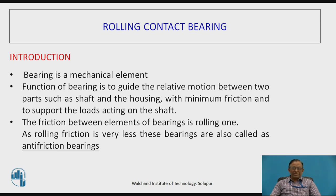Bearing is a mechanical element which is used to guide the relative motion between two parts such as shaft and housing with minimum friction and also to support the loads acting on the shaft. The friction between the elements of the bearing is rolling, and as rolling friction is very less, these bearings are also called as anti-friction bearings.